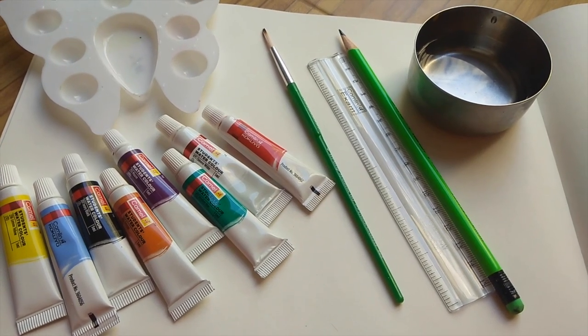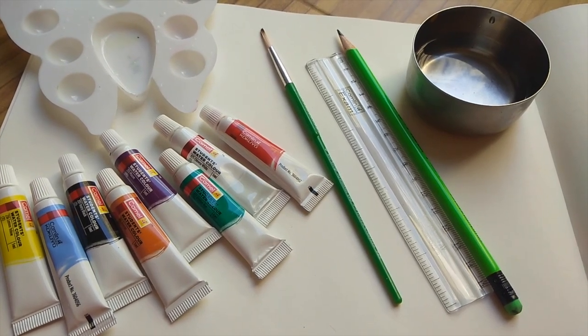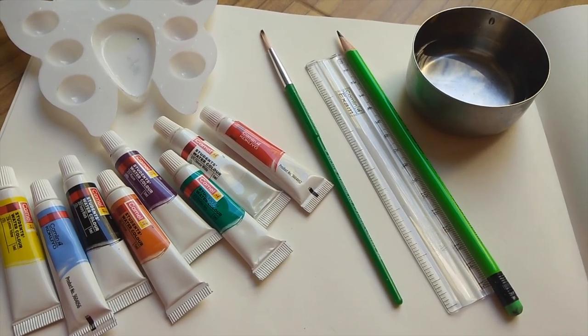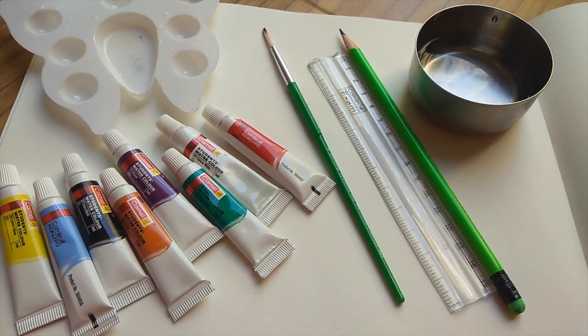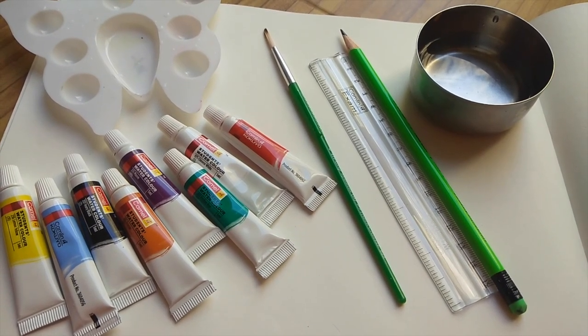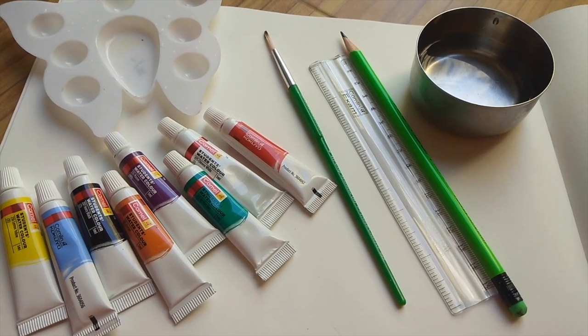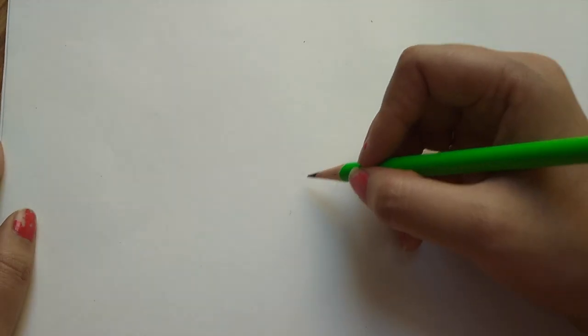To make the elephant we will require some watercolors, paintbrush, water, ruler, a pencil, a blank paper, and a plate to put the colors. We will be drawing two baby elephants. The first one will be a little tough and the second one will be simpler. So let's start the baby elephant, first one.